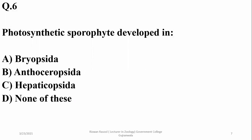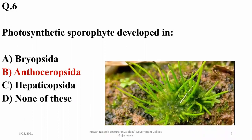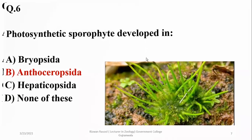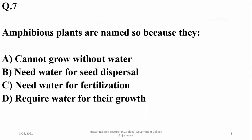A photosynthetic sporophyte is developed in Anthocerotopsida (hornworts). There is a green sporophyte plant attached to the base gametophyte. This is the only group of bryophytes having a photosynthetic sporophyte.